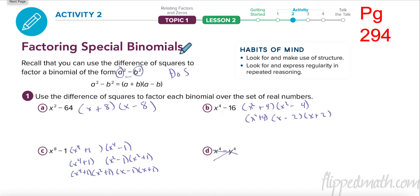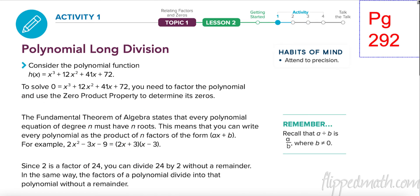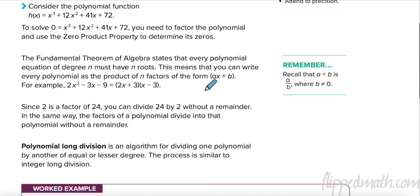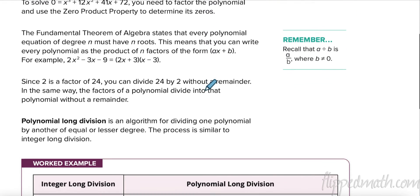Today we're going to be skipping around a little bit — I apologize. That was on page 294. Hopefully I put the page numbers up at the top for you. Now let's get back to page 292 where we're going to be dividing polynomials.